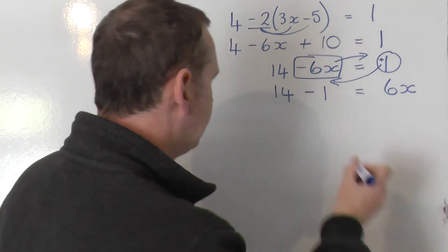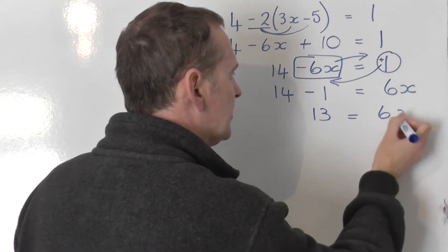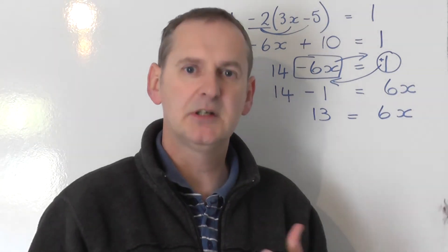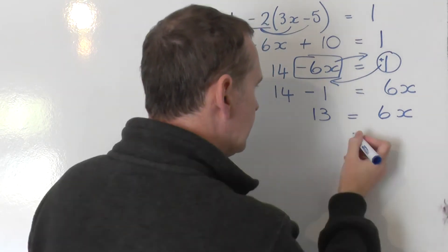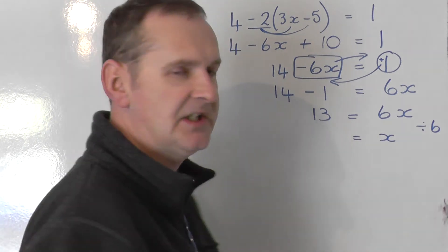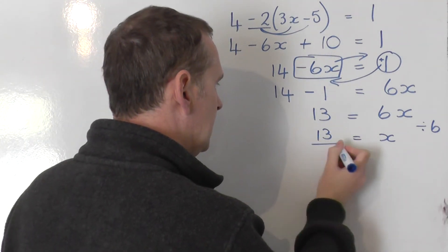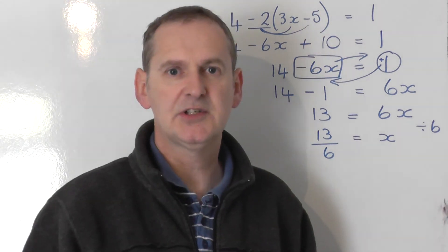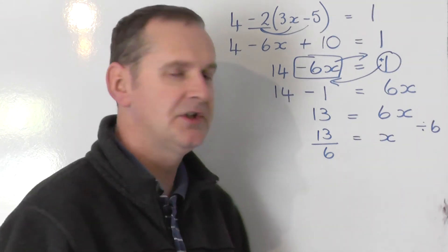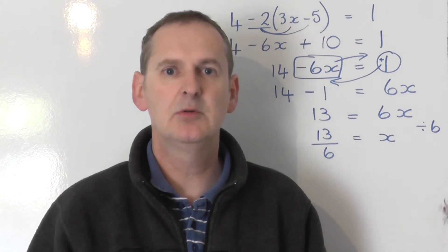Let's tidy up a little bit on the left. 14 take 1 is the same as 13, and that's equal to 6x. But I don't want to know what 6x is. I want to know what x is. So to go from 6x to get x, I share by 6. So to keep it balanced, I share the other side by 6. So I take the 13 and I share that by 6. 13 share by 6 is an awkward decimal. So I'm going to leave the answer as that fraction, 13/6. That doesn't cancel, so there's the answer. 13/6 equals x.